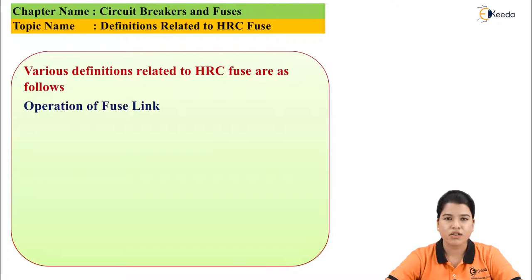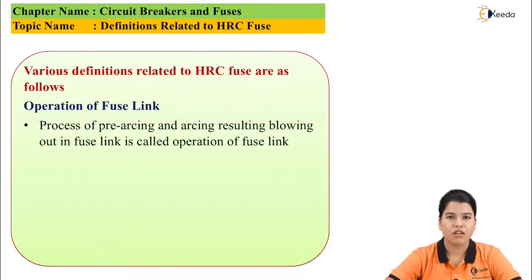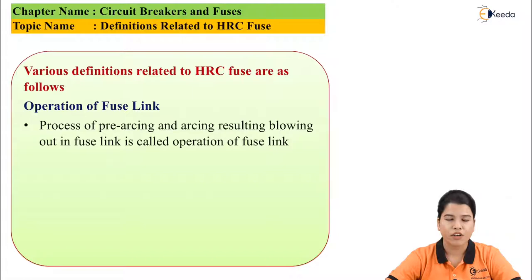The first definition is operation of fuse link. The process of pre-arcing and arcing which results in blowing out of the fuse link is called as operation of fuse link.